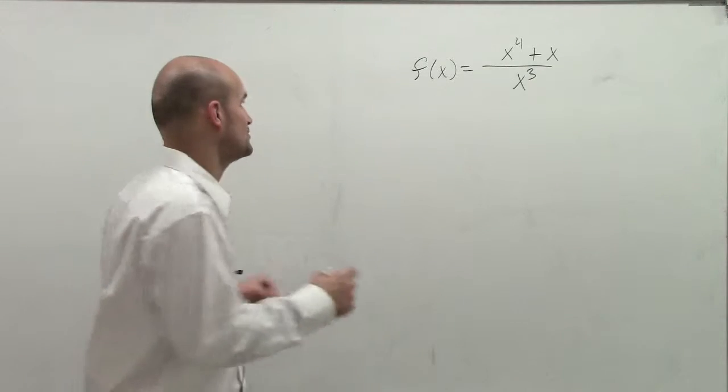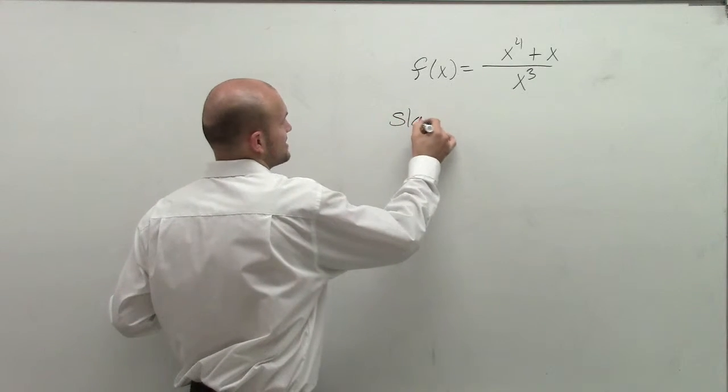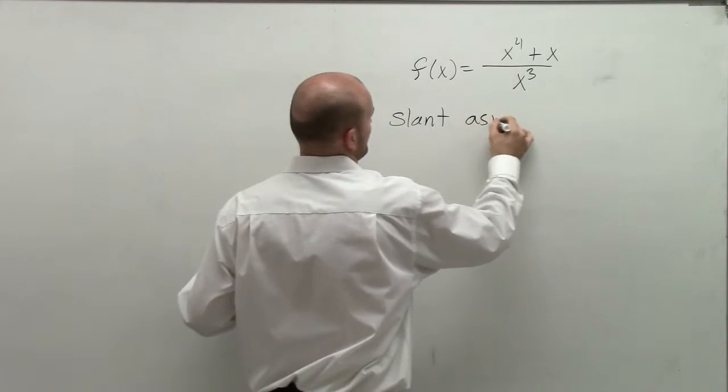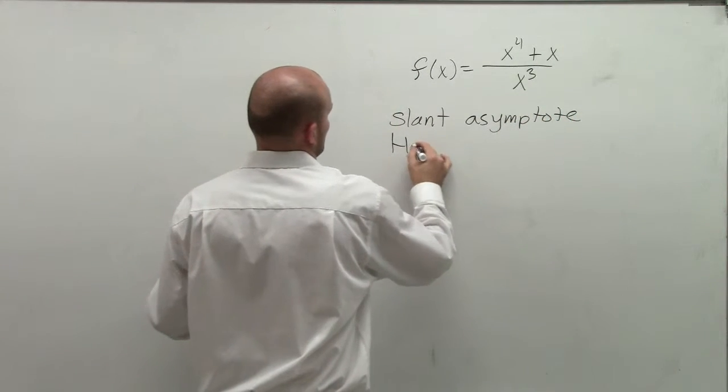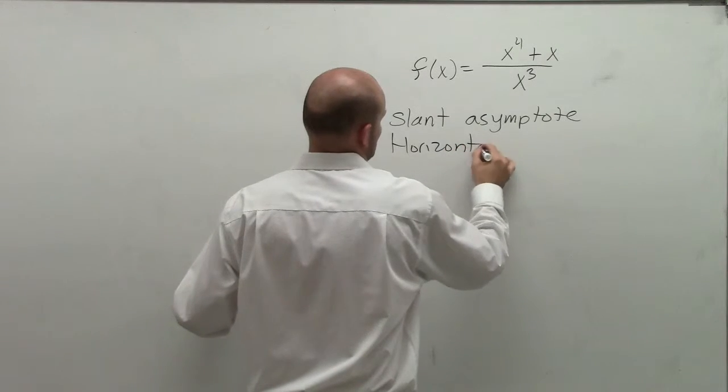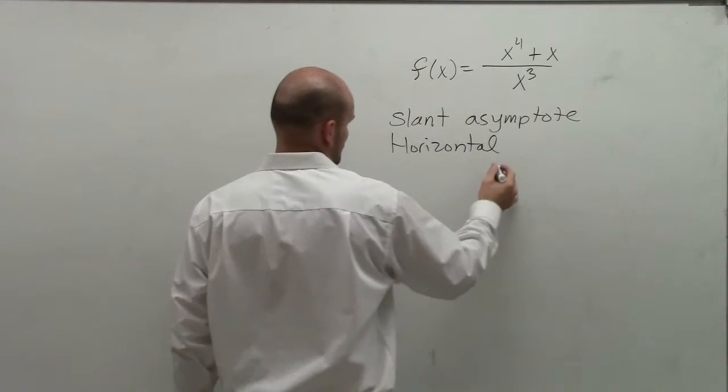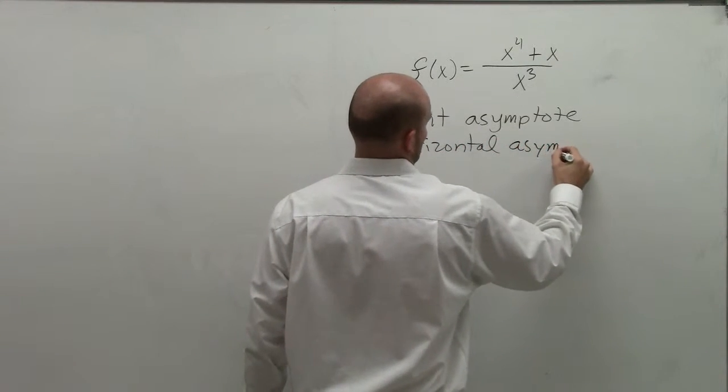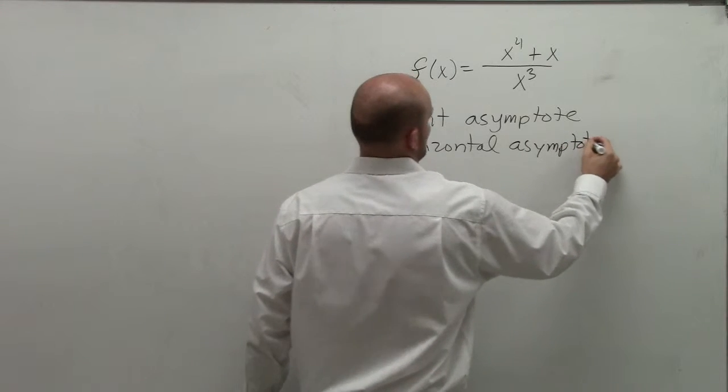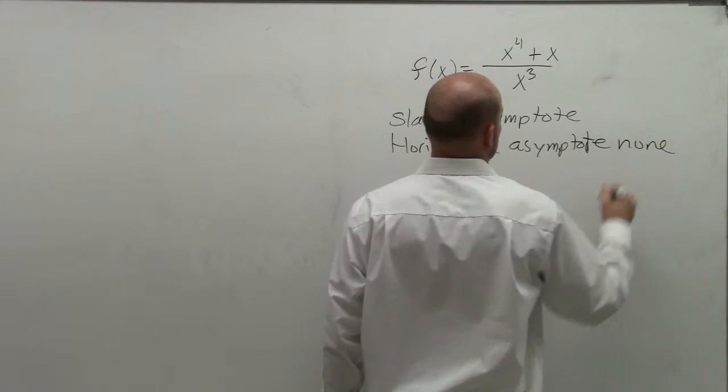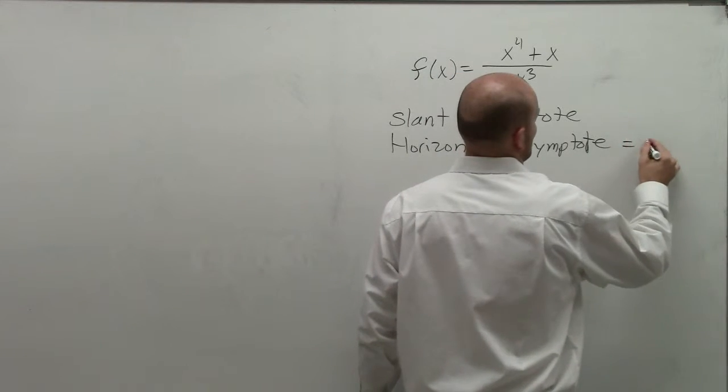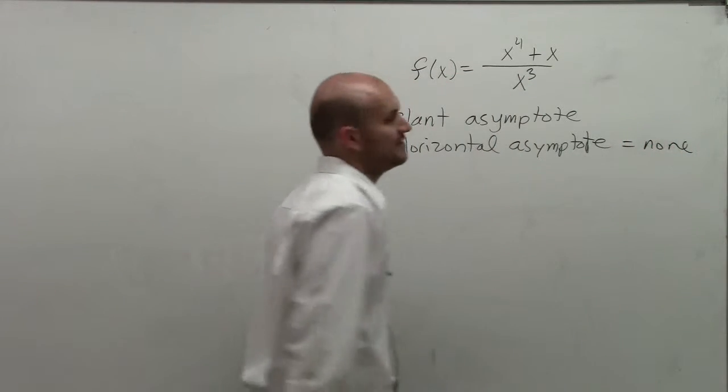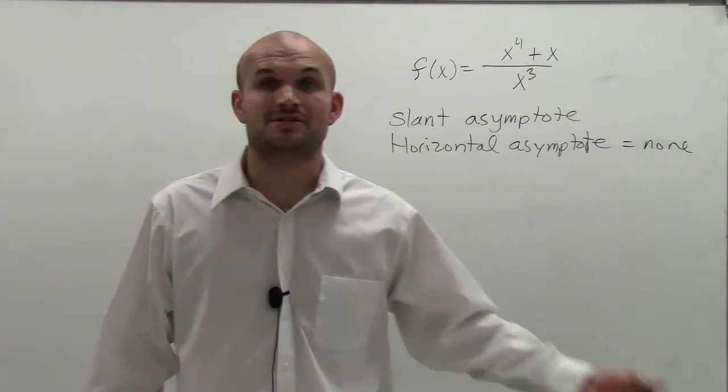However, they'll open up the door for me because I need to have a slant asymptote. Now, as far as going for a vertical asymptote, what I need to do is I need to figure out what is going to make my denominator equal to zero.